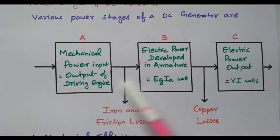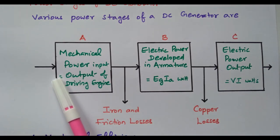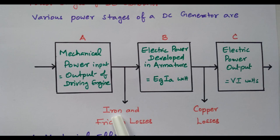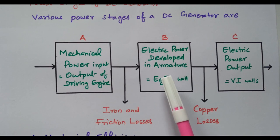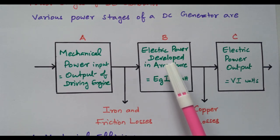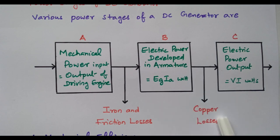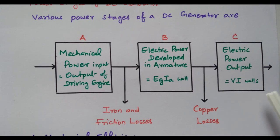So these are the three stages available. In the first stage, mechanical energy is given to the armature winding and the armature winding starts to rotate. Immediately, iron core loss and friction loss happen. The remaining goes to the next stage. Due to the change in flux in the field winding, EMF is induced in the armature — EG × IA. Again, there will be some losses due to copper in the winding, and the remaining energy will be available at the output.